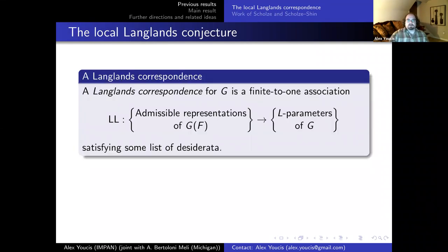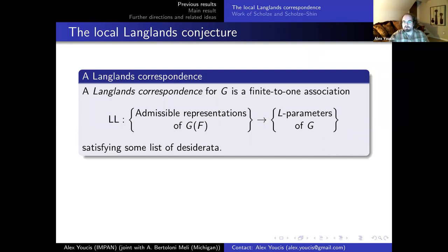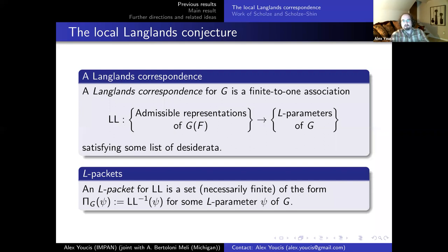I'm going to start out with a sort of intentionally vague definition. A Langlands correspondence for G is going to be a finite-to-one association that takes in admissible representations of G(F) and spits out L-parameters. I want it to satisfy some list of properties, but those properties I want to get to later. An L-packet is going to be the pre-image of a parameter under this map — a finite set associated to any given L-parameter ψ.